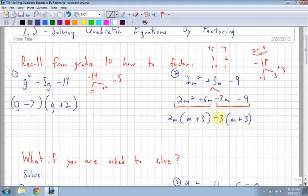Finally, I look at these two terms, the 2m times m plus 3 and the 3 times m plus 3. They both have an m plus 3 in common. Then I'm just left with my 2m minus 3. That's how you factor from grade 10.